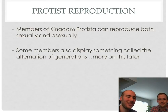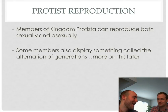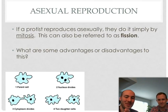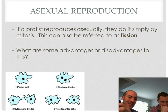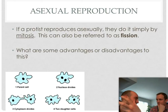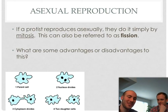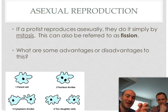Protists can reproduce asexually and sexually. When a protist reproduces asexually, it simply divides by mitosis. For a single-celled organism dividing by mitosis, we call it fission — just like binary fission in bacteria.